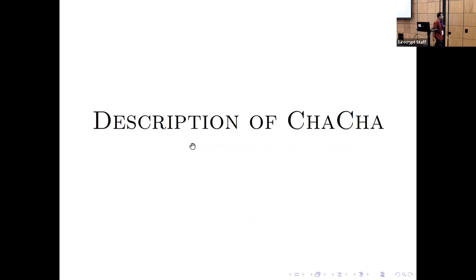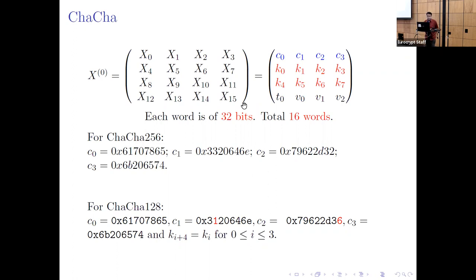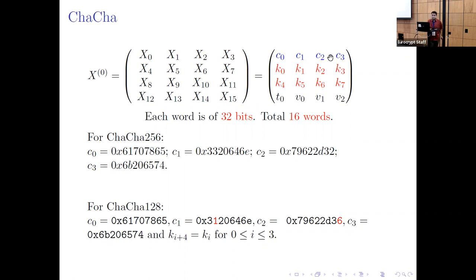So first is the ChaCha cipher. ChaCha cipher has one matrix X, a four-by-four matrix. Each entry is 32 bits and we call each cell one word. So we have total 16 words of 32 bits, giving 512 bits total. In this matrix, the first row is the constant row — C0, C1, C2, C3 — this is fixed constant. The second and third rows are key rows and the last row is the public variable.